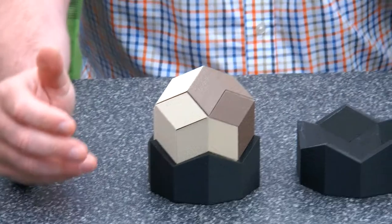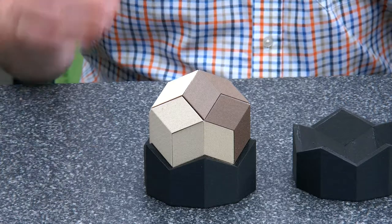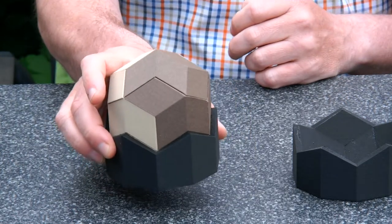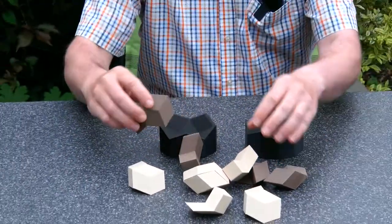But the way that Anton presented this puzzle was actually as a sort of a challenge and a gimmick to tease puzzlers. So we see that we can make the rhombic tricontahedron. And here we have all the pieces.